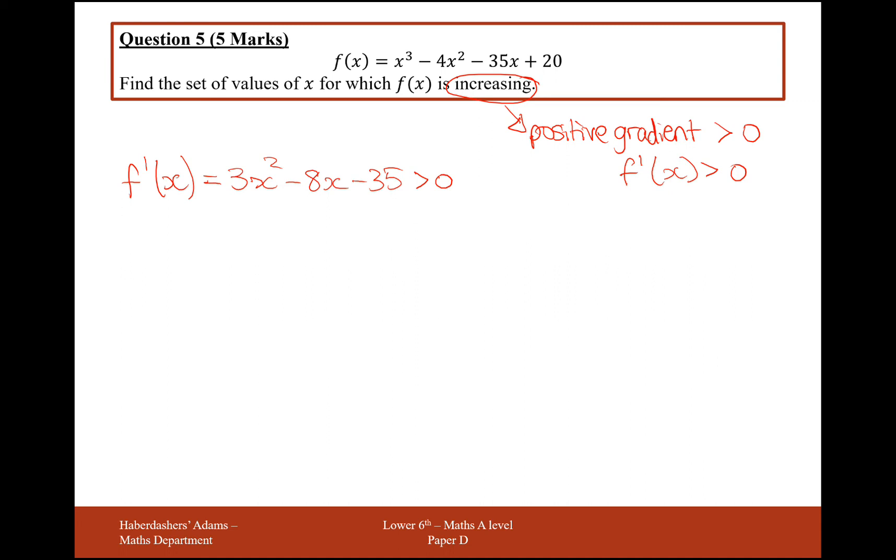So what I'm going to do here is attempt to factorize first. If that doesn't work, I'll use the quadratic formula. 3x and x, and I believe this will get me 3x plus 7 and x minus 5. That'll be minus 15x, add to 7x, get minus 8x, and 7 times minus 5 is minus 35.